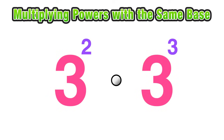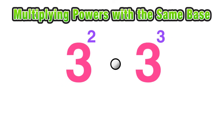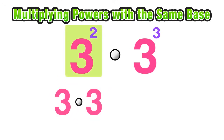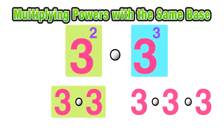With this in mind, let's go ahead and try to simplify this. We'll start by rewriting each term in expanded form: 3 to the second power is 3 times 3, and 3 to the third power is 3 times 3 times 3.